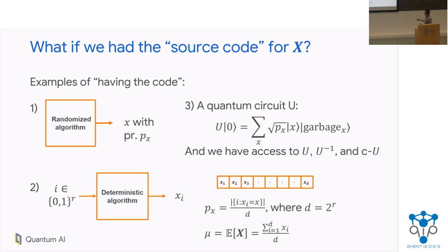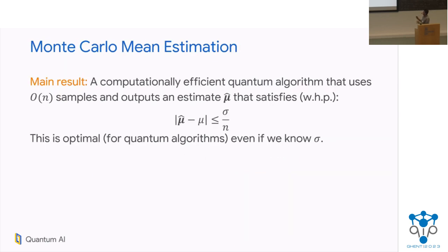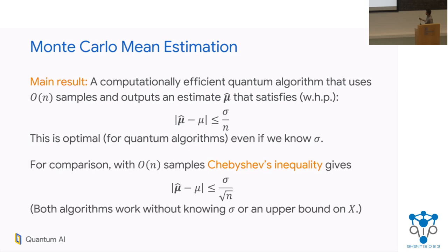For the rest of the talk, keep this model in mind: you just have some circuit that you can feed an i and you'll get X_i. This is our main result. We show a quantum algorithm that's computationally efficient — it has reasonable gate complexity — that uses order n queries to the unitary, and outputs an estimate with error sigma over n. To compare with the classical case, Chebyshev's inequality gives you sigma over root n. So the n became a root n — it's a quadratic speedup in sample complexity. Our algorithm is optimal for quantum algorithms, even if you know sigma. Just like the classical algorithm, it works without knowing an upper bound on the standard deviation sigma, and it doesn't need to assume that the random variable is bounded.